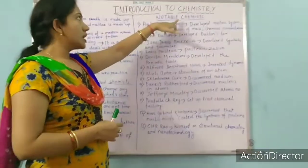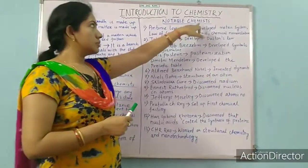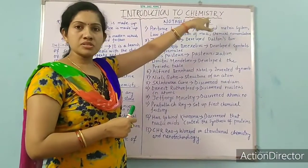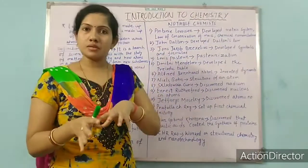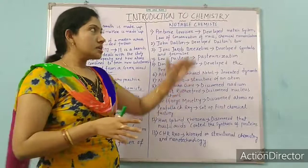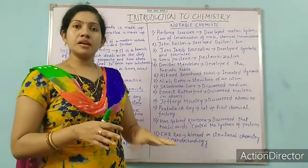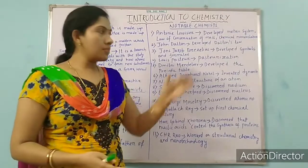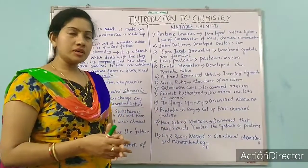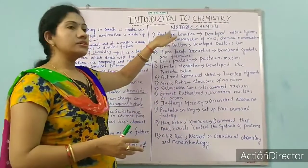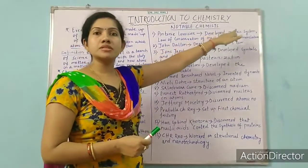Next topic — we will start about notable chemists. Those who practice chemistry we call them chemists. Some notable chemists are those who have made important discoveries — we will read a few of them here. First, Anthony Lavoisier, who developed a metric system.